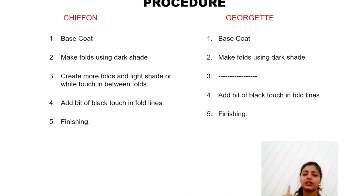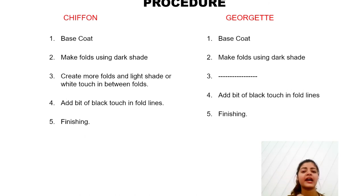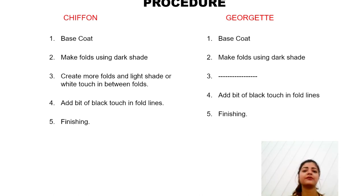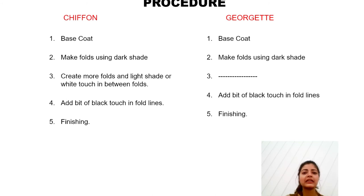The third step is: create more folds and add a light shade or white touch in between the folds. First, we create a lot of folds for chiffon, and in between those folds, we add a little white color. What this does is make our chiffon look slightly shiny and smooth, with light and dark clearly visible. In georgette, this white-touch step is missing — that is the very minute difference we have to keep in mind while rendering chiffon.